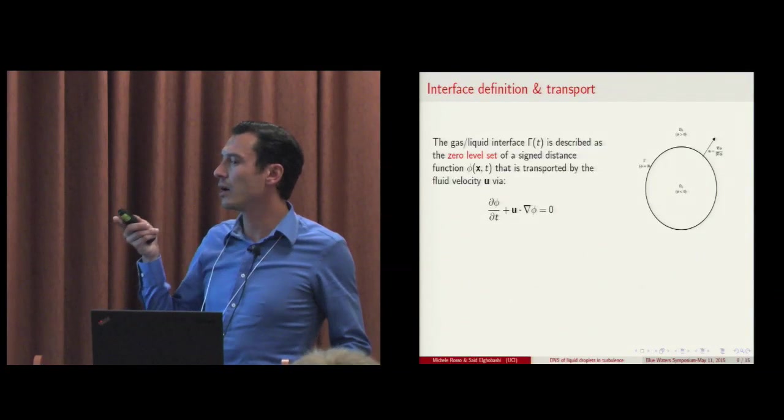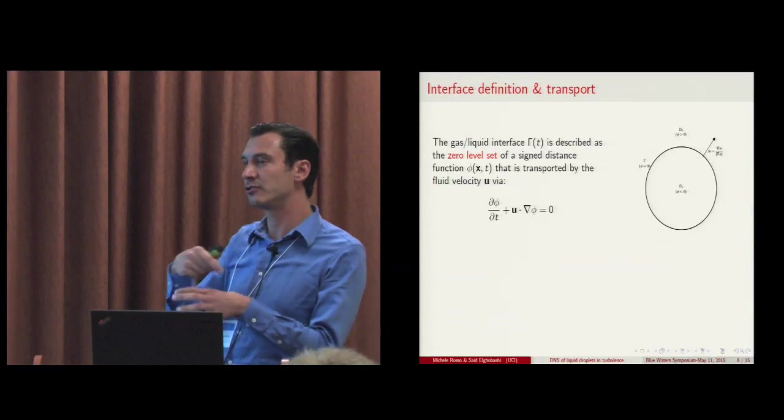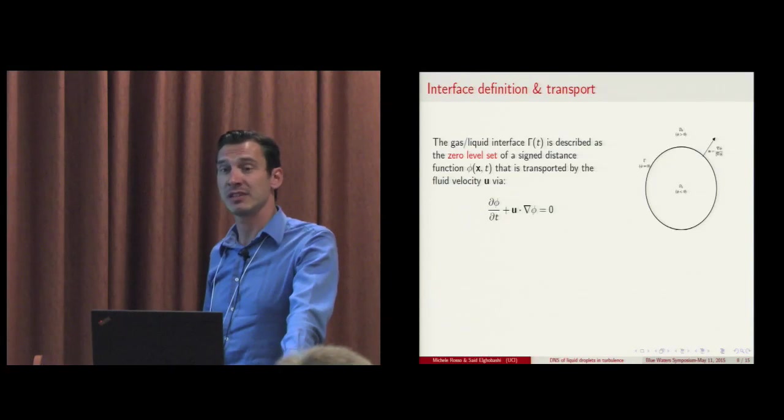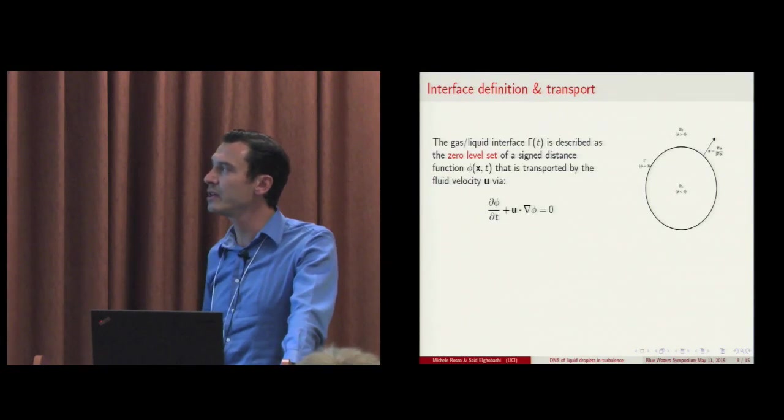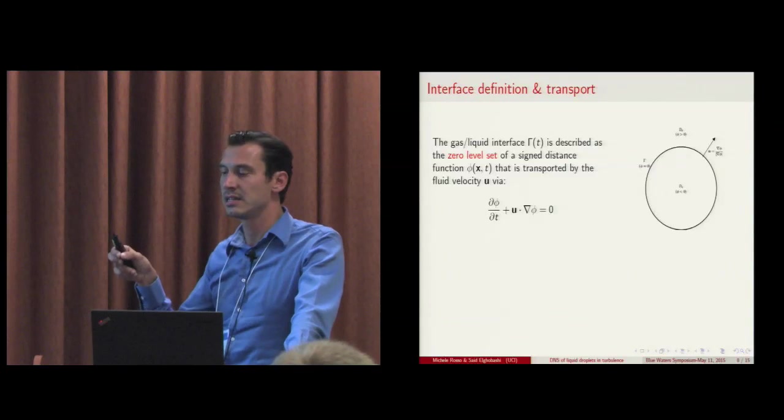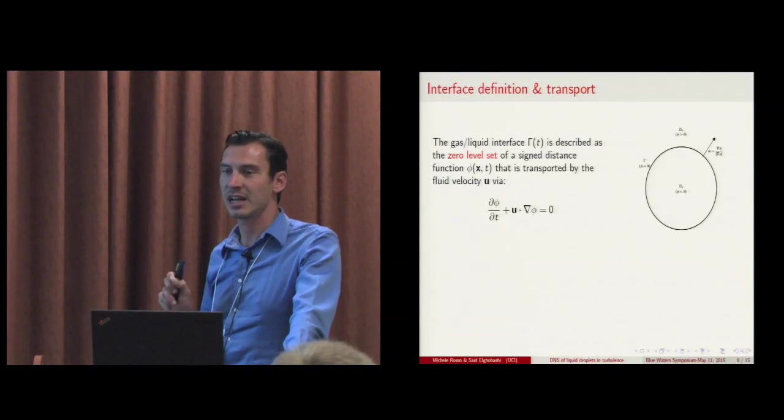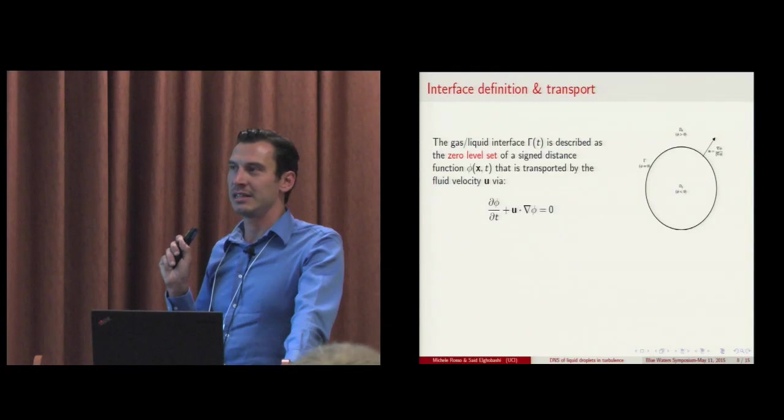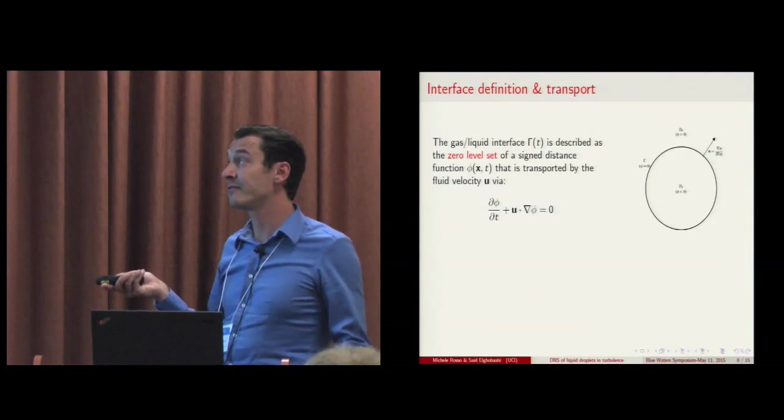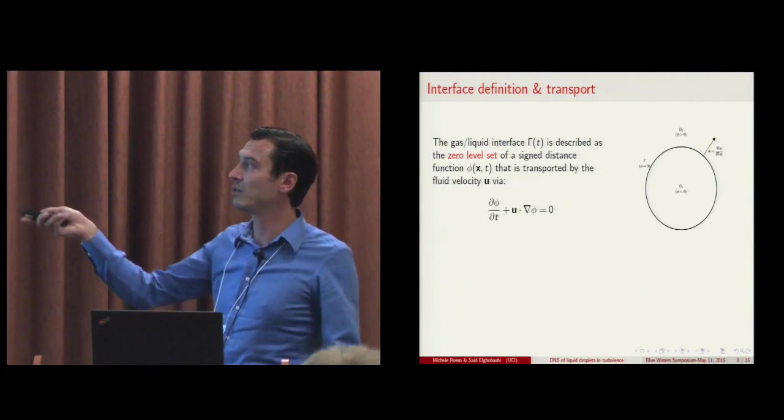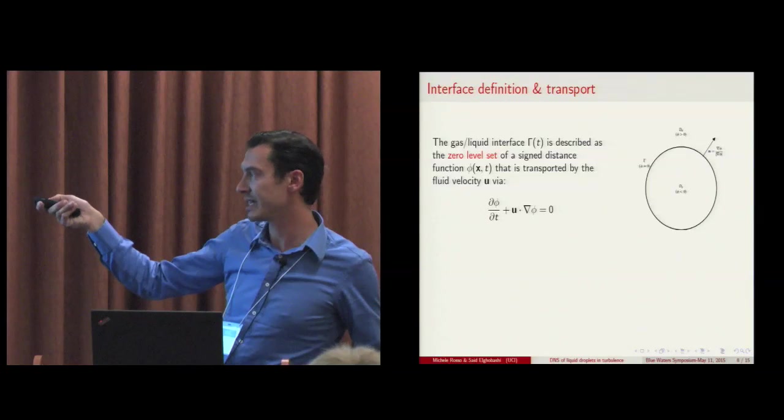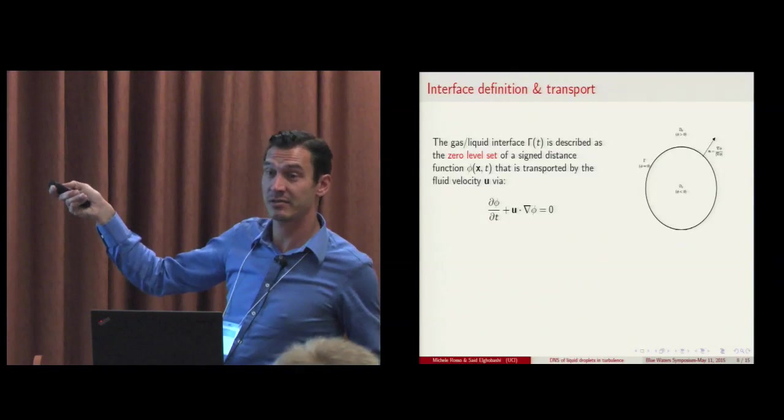In order to track the interface, so the droplet surface between the two phases, gas and liquid, we use the level set method. So basically, in the whole computational domain, we define a function phi that we choose to be a signed distance function, meaning that in every point of the domain we have a scalar value that represents the closest normal distance from the interface. And this function has a value depending on whether we are inside the liquid phase, in this case we choose to have it minus, or outside, in this case we choose to have it plus. And phi is equal to zero on the interface between the two phases.